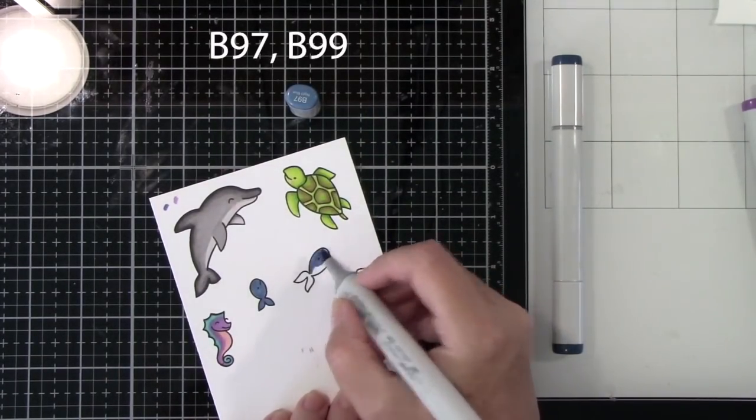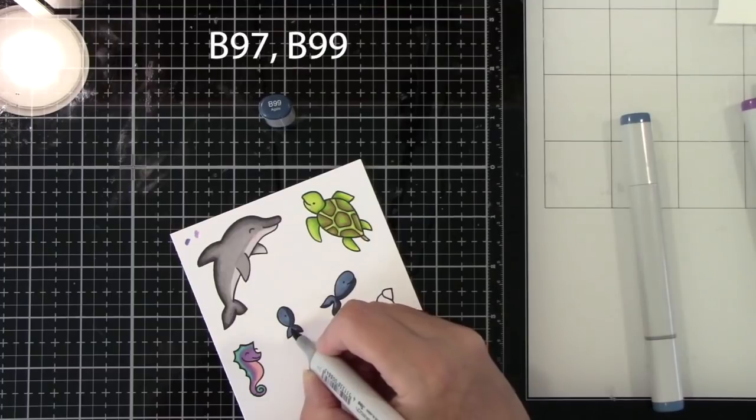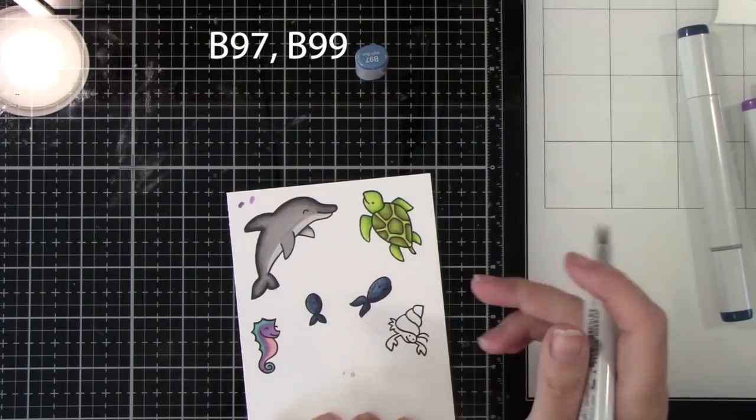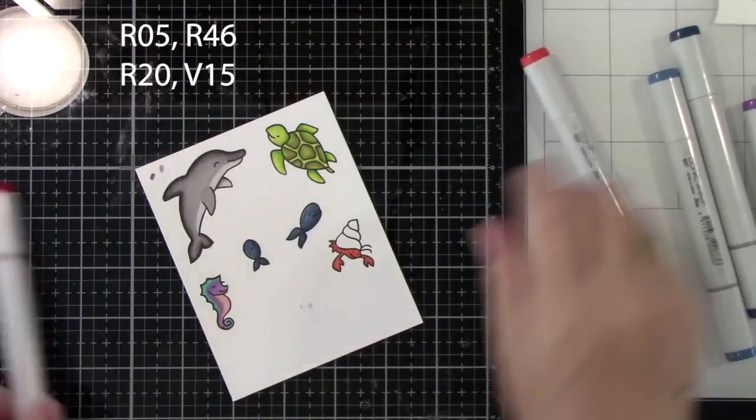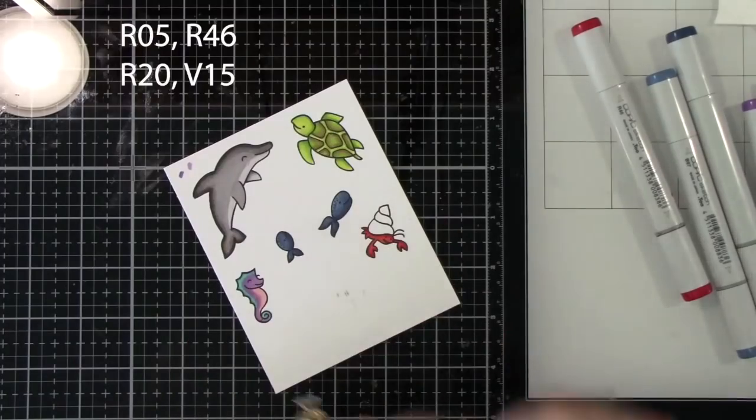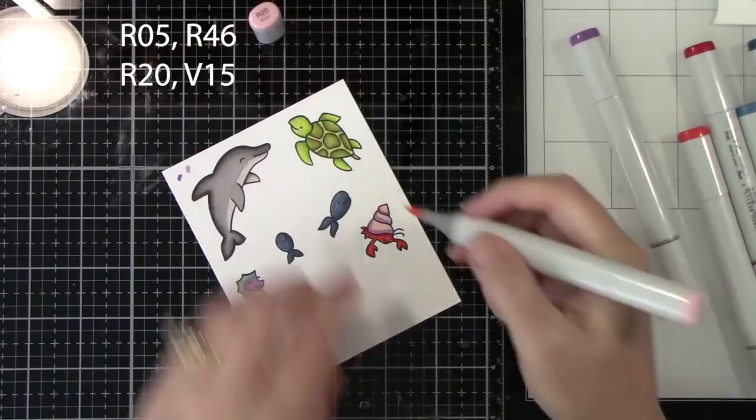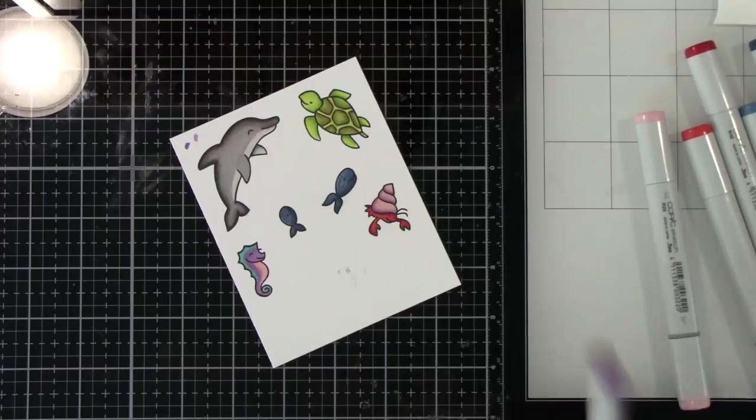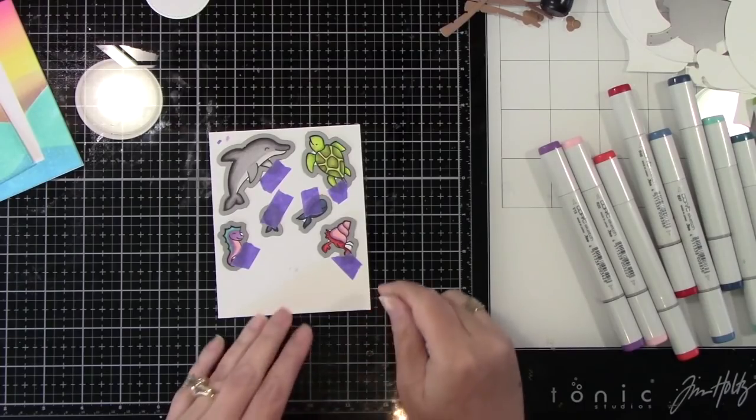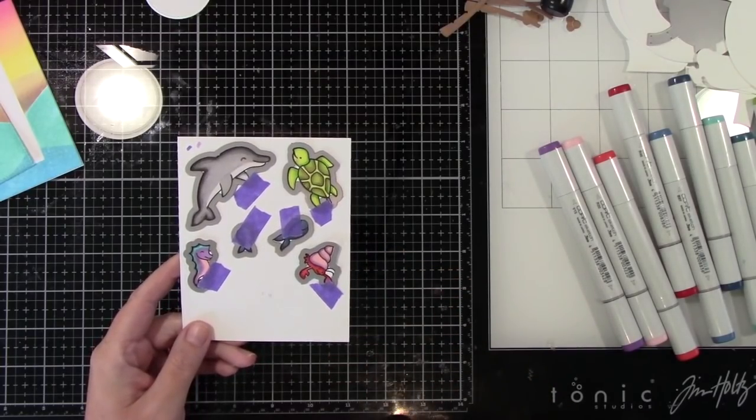And then these cute little fish, B97 and B99. Now I did end up coloring three more fish and adding it to the card off camera after I was all done before I took pictures. You guys will see those in the pictures. I just felt like I needed some more fish. And I just ended up using the teals and the purples, the same color combos that I've used here. So R05, R46 for the crab's body and R20 and V15 for his cute little shell. Now I'm using the coordinating dies and I'm using some low tack tape to tape those in place. And then I'm going to run that through my die cut machine. And we'll have these really adorable images.